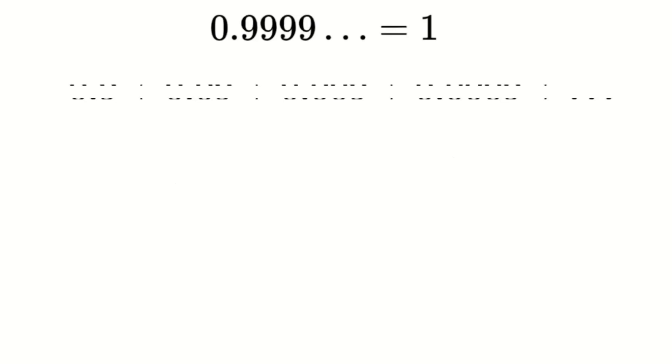First, let's go over the standard proof often used to show that 0.99 dot dot up to infinity equals 1. It's based on an infinite geometric series. We express 0.99 dot dot up to infinity as 0.9 plus 0.09 plus 0.009 plus 0.0009 and so on. This forms an infinite geometric series where the first term, which we call A, is 0.9 and the common ratio, or R, is 0.1.